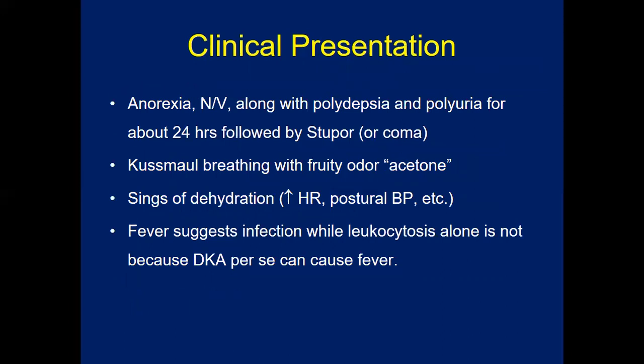Clinically, the patient may present with anorexia, nausea, and vomiting along with polydipsia and polyuria for the last 24 hours, followed by stupor or coma, or may be brought to the emergency in a semi-unconscious state. There will be a fruity odor in the breath due to acetone, signs of dehydration, increased heart rate, and postural blood pressure changes. Fever suggests infection, though WBC count alone is insufficient because DKA itself can cause fever.